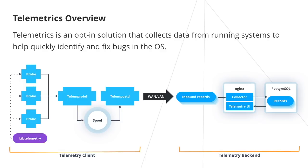The Clear Linux telemetrics solution consists of a client and server which communicate over the network. The client gathers system-level debug and crash information using specialized probes and sends that data to the server for presentation and analysis. Both the client and server are customizable to suit your needs, and the LibTelemetry library provides an API to allow you to create custom telemetry records from your applications.